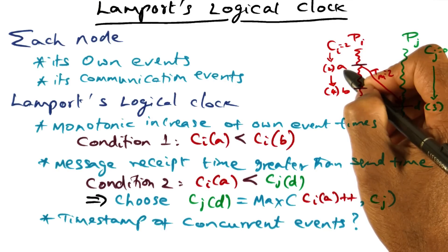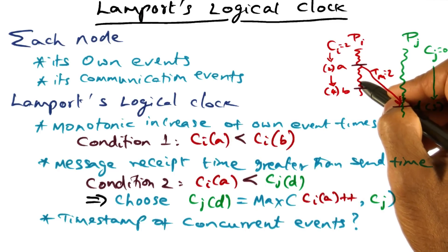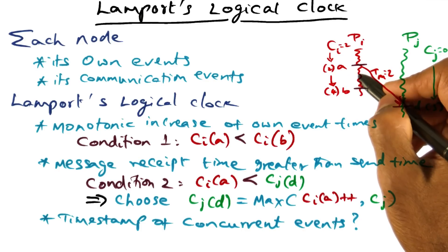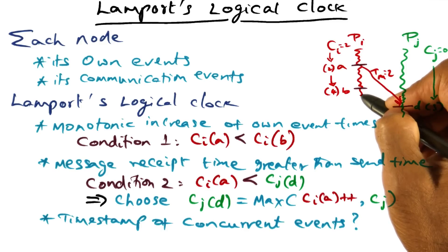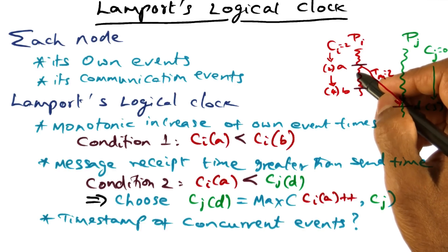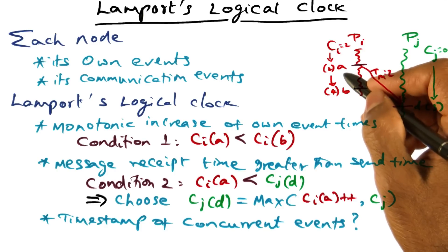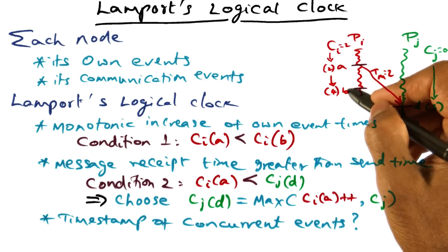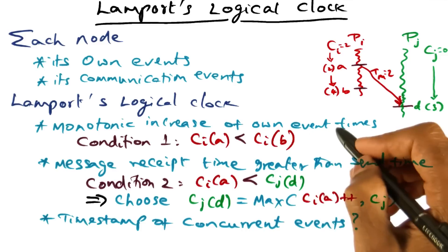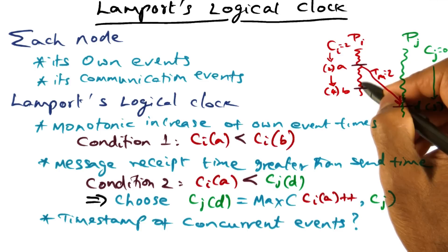For instance, the timestamp for event A is 2. This counter monotonically increases as we accumulate events in our system. Once I've associated timestamp 2 with event A, I cannot associate the same timestamp with other events in my process, so I increment it. It's completely up to your implementation whether you increase the counter by 1, 2, or 1000 — it doesn't really matter. In this case I've incremented by 2, so the next event B has a timestamp of 4.